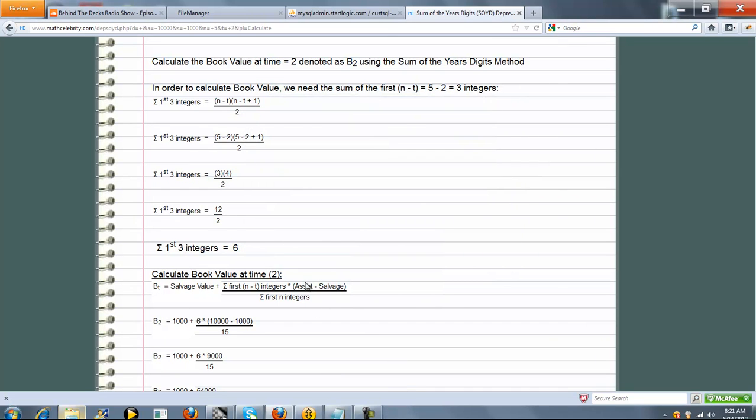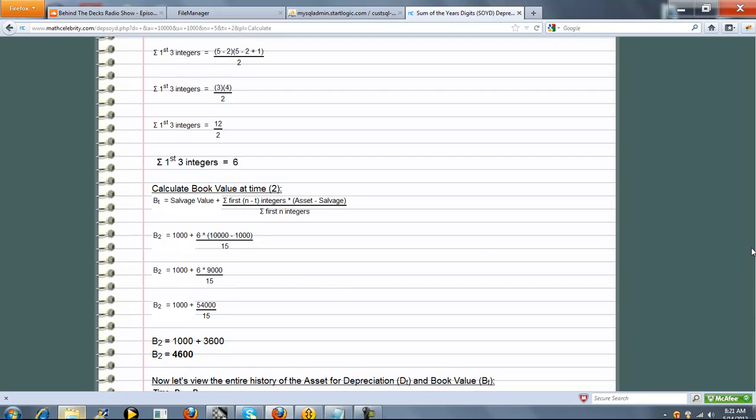So the book value formula is here. We plug in what we know, evaluate, simplify, and we do get 4600 book value at time 2.